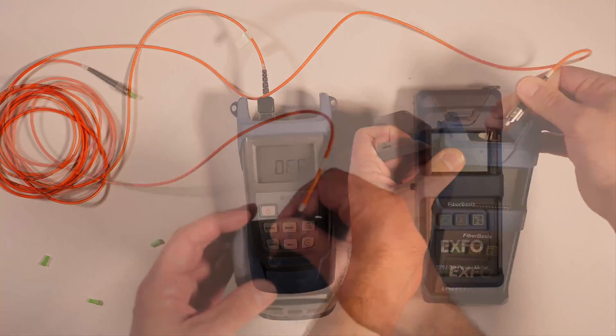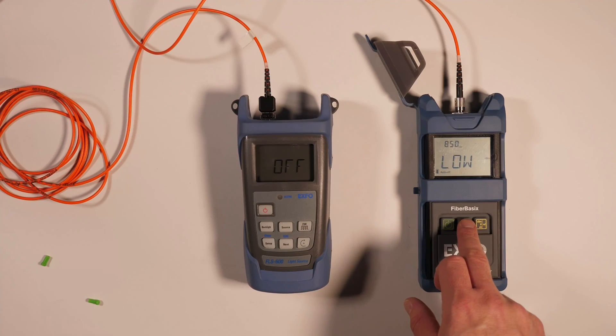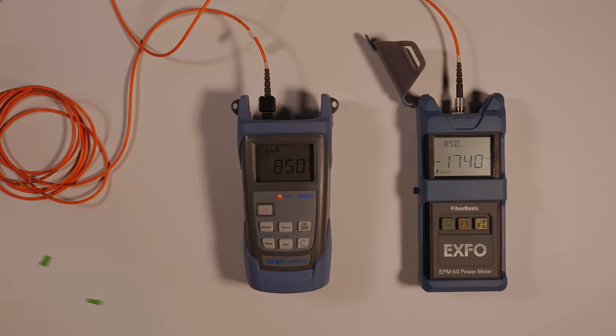With the reference level set, disconnect the patch cord from the power meter and connect it to the fiber you wish to test. Use the power meter at the other end of the fiber link to measure the received power level. The difference between the reference level and the received power level is the loss of the fiber link.